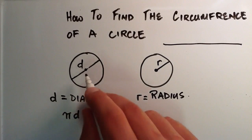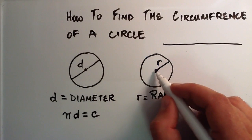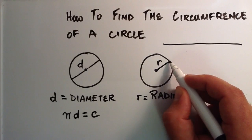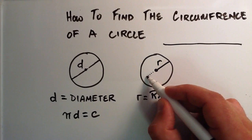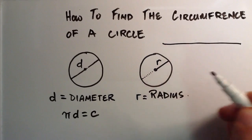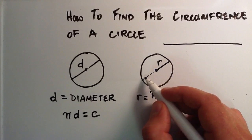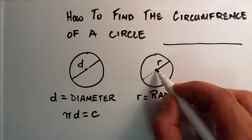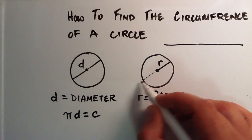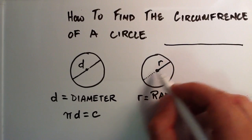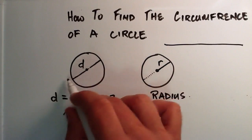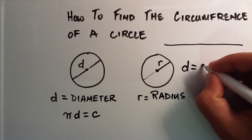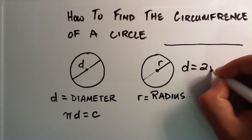If we were to take another radius and make it travel the other direction, then we have two radii, and this is the same distance as the diameter. So we have one radius going this way, another one going this way, and two of these radii equals the diameter. The diameter is equal to two radii.